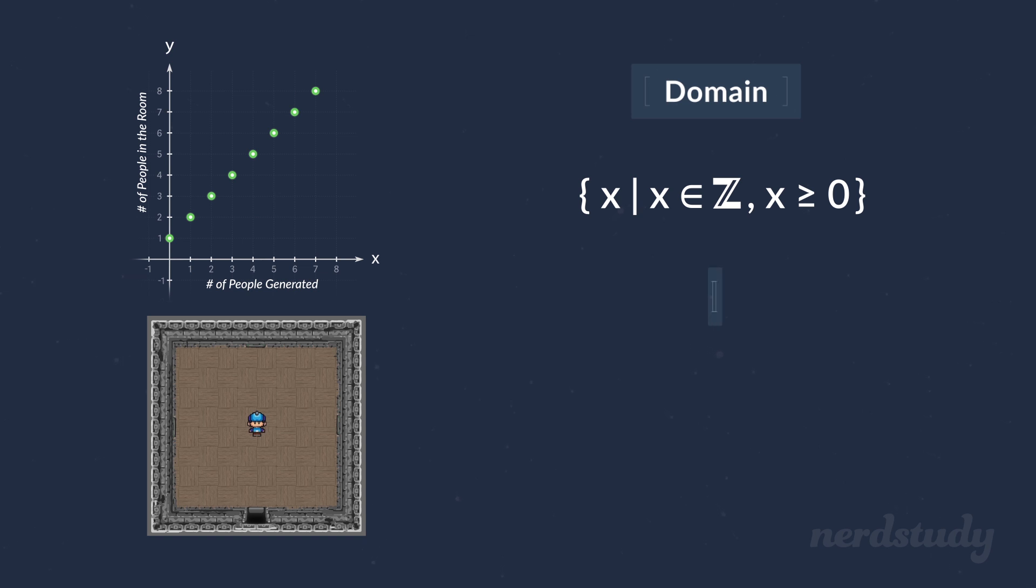Now, what could we write for a range then? Well, the minimum number of people the computer serves out is zero. And if there are no other people in the room, then only that one player would be in the room. This means that the smallest possible range is one, since one person is always in the room. If the computer generates one person, then there are two people in the room, including the player. So on and so forth. Again, since the computer never serves 0.5 people in the room, we can never get a fraction or a decimal like 1.5 as part of our range either. Or shall I say, as part of our output.